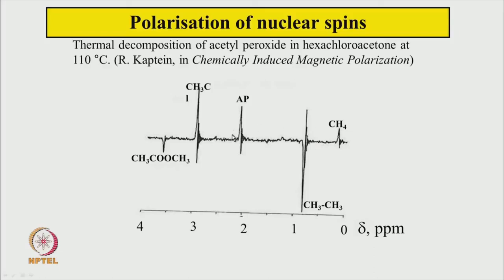This is the NMR spectrum of a reacting system where acetyl peroxide is reacting with a solvent. Peroxides are known to break down when heated and undergo chemical reactions. Here we see ethane and CH3Cl — the Cl has come from the solvent. Some signals are going up (absorptive) and others are going down. The signal from one molecule and the signal from another molecule appear in opposite senses — they are emissive in nature.